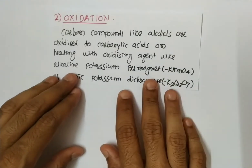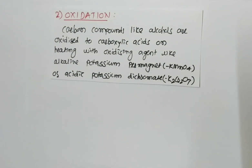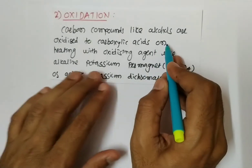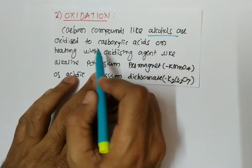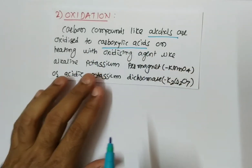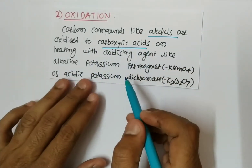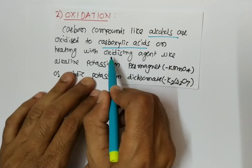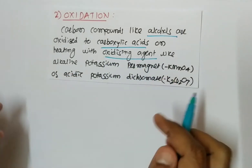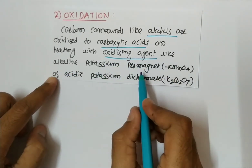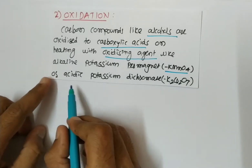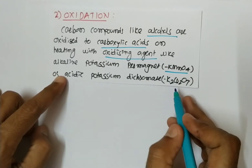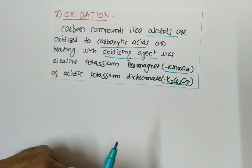The second reaction is the oxidation reaction. In the oxidation reaction, carbon compounds like alcohol are oxidized to carboxylic acid. Alcohol is oxidized to carboxylic acid on heating with an oxidizing agent. The oxidizing agents used are alkaline potassium permanganate, that is KMnO4, or acidic potassium dichromate, that is K2Cr2O7.